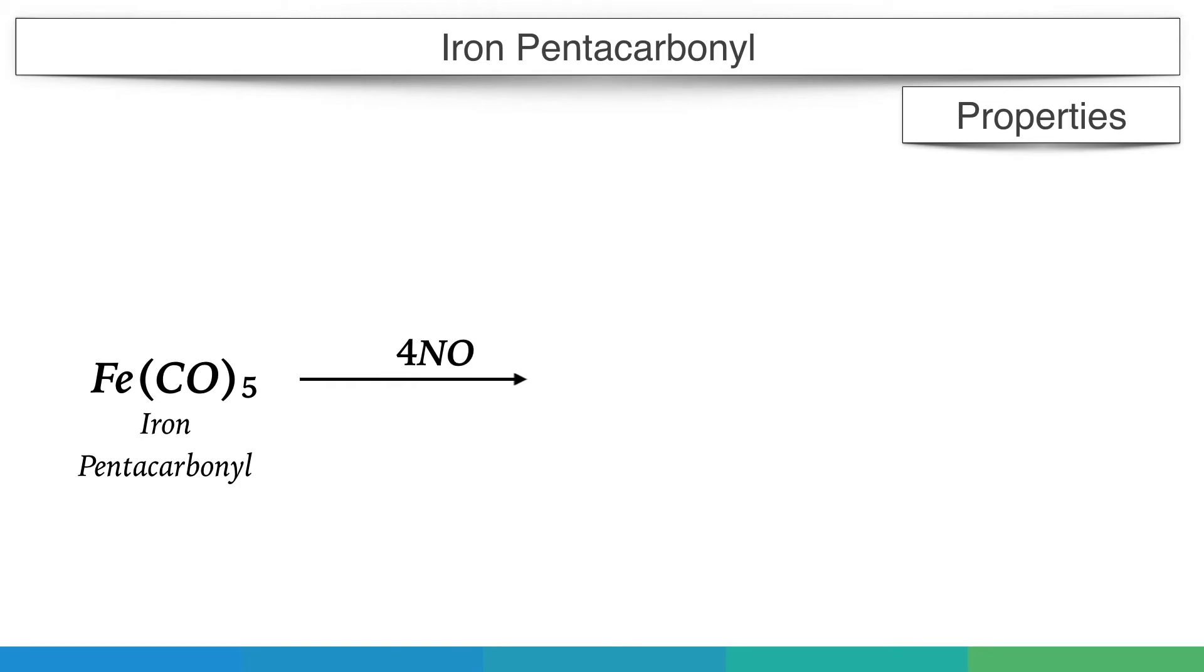Nitric oxide under pressure below 318 degree Kelvin reacts with iron pentacarbonyl and forms a black crystalline compound, iron nitrosyl. When iron pentacarbonyl reacts with non-metallic halides, it behaves as a de-halogenating or reducing agent.